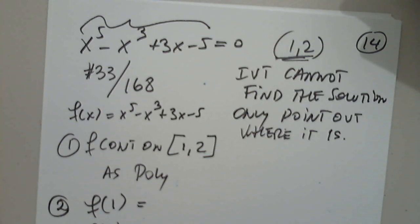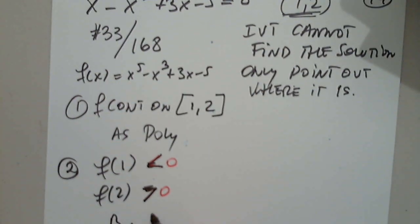1, 2. At 1, the function is negative. And at 2, the function is positive. That's all I care about. So I don't even need to copy the number. At 1 is negative, at 2 is positive. By IVT, there exists c in the interval 1, 2, such that f of c is 0. That's it. We know there is a solution between 1 and 2. But IVT cannot tell us what it is.